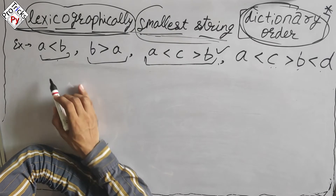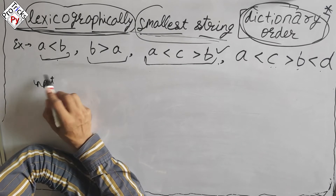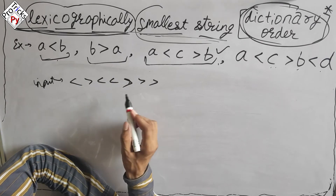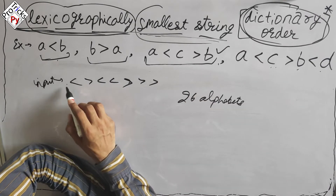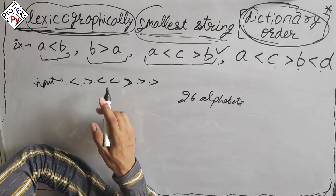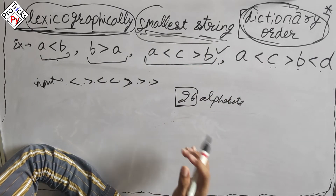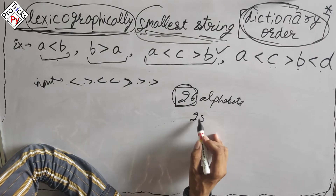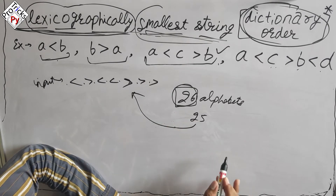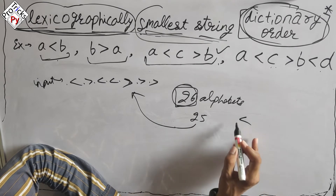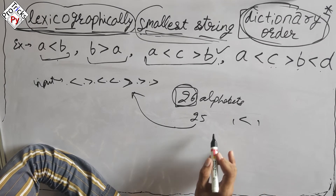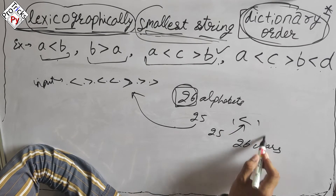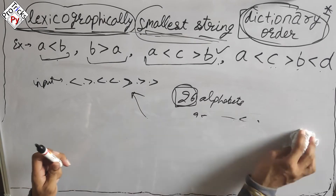The input will be given as a sequence of less-than and greater-than signs, and we have to place alphabets from all 26 between these signs to form the lexicographically smallest string. Since there are only 26 alphabets, we won't have more than 25 signs. One sign gives two characters; 25 signs give 26 character positions.